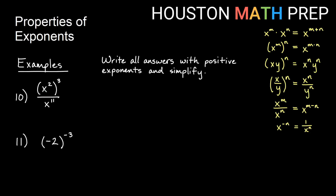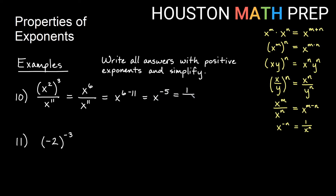Combining rules: x squared all cubed over x to the eleventh. First, apply the power-of-a-power rule to the numerator: multiply exponents to get x to the sixth. Then divide by x to the eleventh using the quotient rule — subtract exponents: x to the 6 minus 11 gives x to the negative 5. Since we want positive exponents, this equals 1 over x to the fifth.